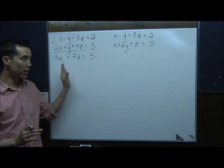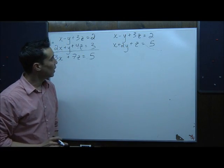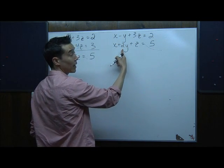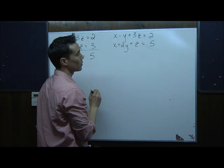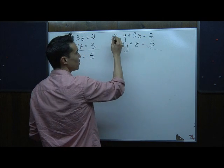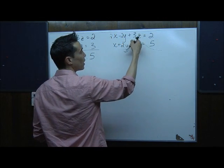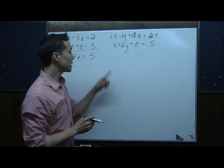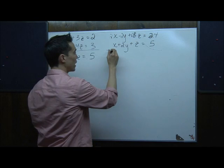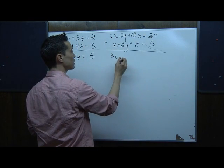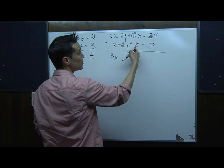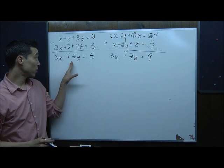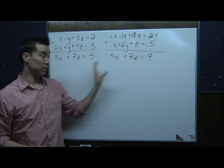I eliminated y in the first pair, so I need to similarly eliminate y in the second pair. I'll multiply the top equation by 2 to create negative 2y, so when added to positive 2y the y's cancel. Multiplying through by 2: 2x, negative 2y, 6z, and 4. Adding straight down: 2x plus x is 3x, negative 2y plus 2y drops out, 6z plus z is 7z, and 4 plus 5 is 9.